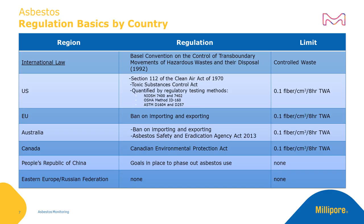Regulation concerning asbestos use and transport can vary widely by country. International law has determined asbestos to be controlled waste under the Basel Convention on the Control of Transboundary Movements of Hazardous Wastes and Their Disposal, circa 1992.